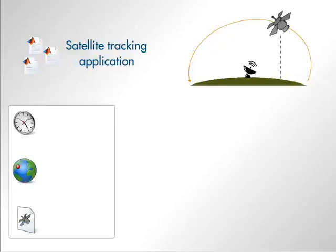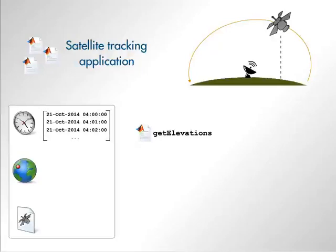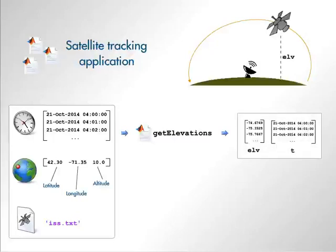To accomplish the calculation, the application has a function called Get Elevations. This function accepts as input the times at which to calculate a satellite's elevation, a three-element vector that specifies the latitude, longitude, and altitude of the observer, and finally, the name of a text file that contains satellite parameters which signify the satellite's orbital motion. The output from the function is the elevations of the satellite over time.